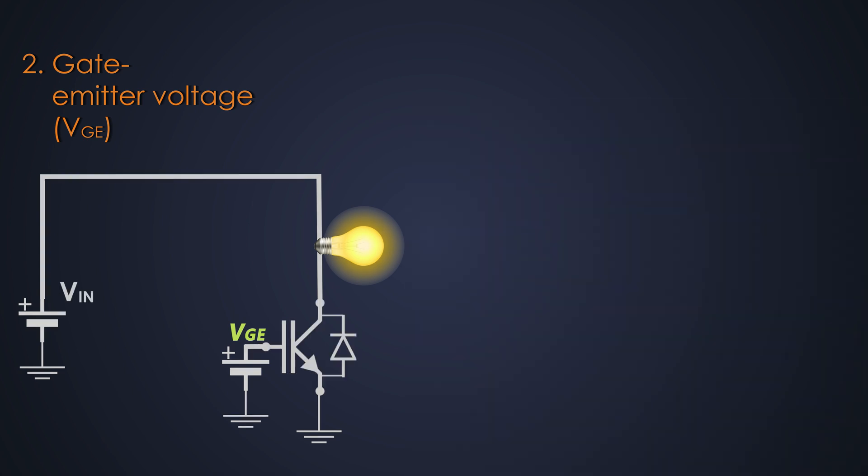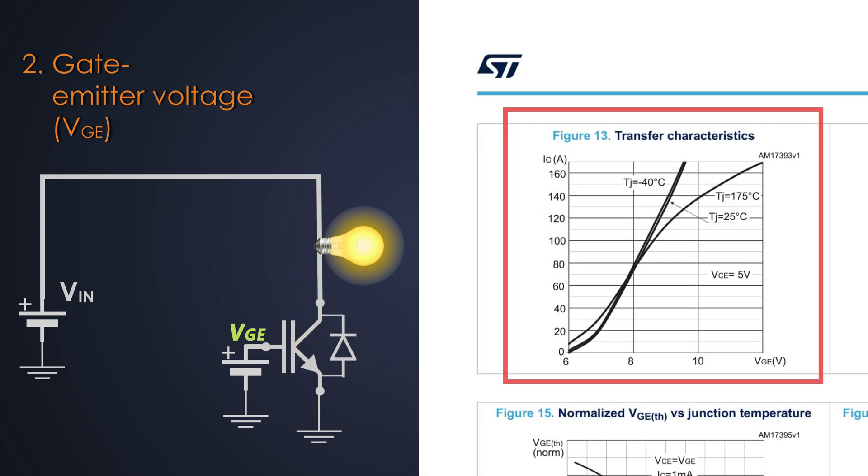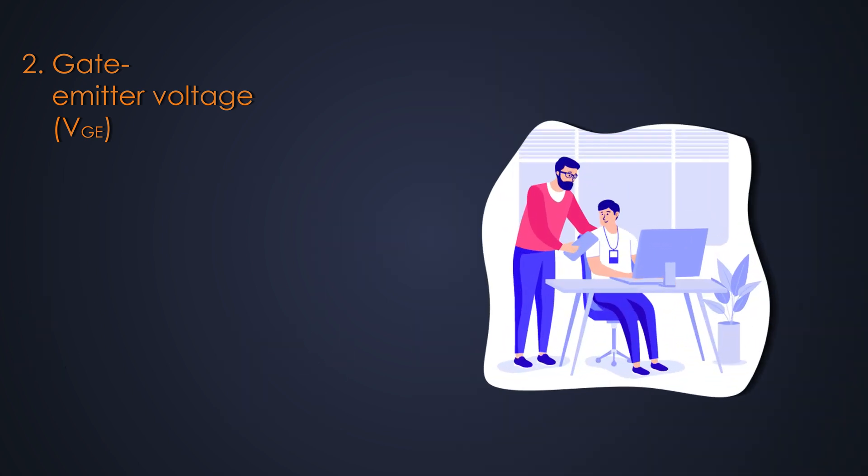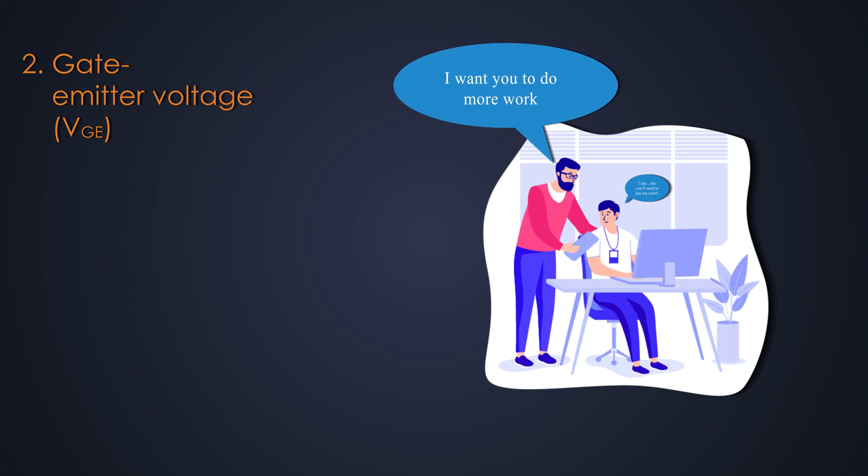If the driver exceeds this VGE range, then it may result in the permanent device degradation due to oxide breakdown and dielectric rupture. So, if you put an IGBT to control the load current of 20 amperes, then 7 volts of gate voltage would be sufficient. But, if you increase the load current up to 80 amperes, then it will demand more. Just like an employee asks for more money if the company asks him to do more work. Well, that will be an ideal case.